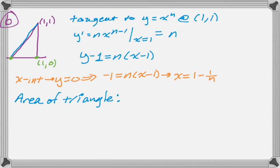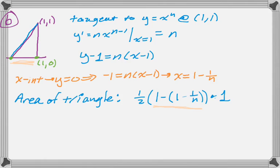Now I find the area of the triangle: one-half times base times height. The base goes from here to here, and then the height. Simplifying that gives the result — which is exactly what the problem told me to show. So I'm done with that part.